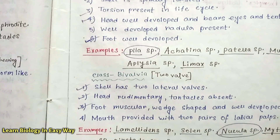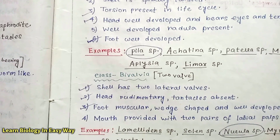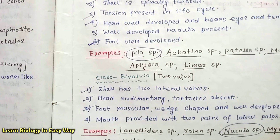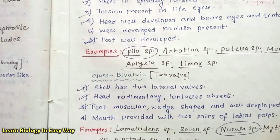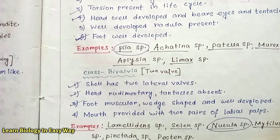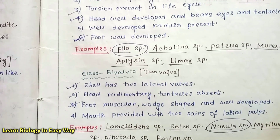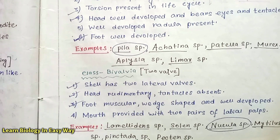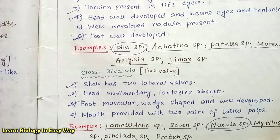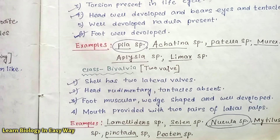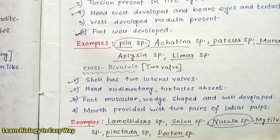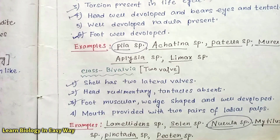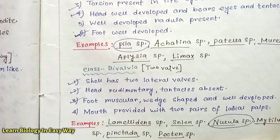Class Bivalvia: Shell has two lateral valves. Head is rudimentary; tentacles are absent. Foot is muscular, wedge-shaped and well developed. Mouth is provided with two pairs of labial palps. Examples: Solen sp., Neopila sp., Mytilus sp., Pecten sp., etc.